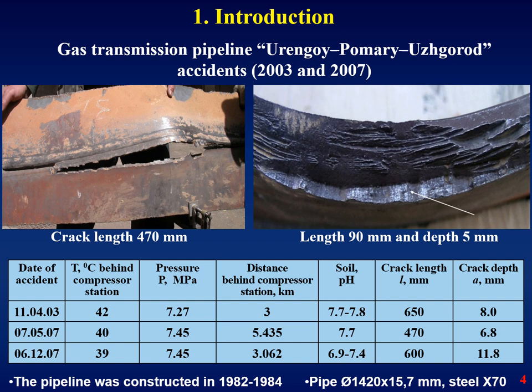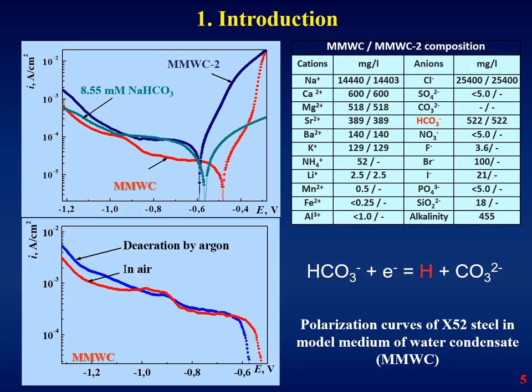However, it doesn't mean that the process on the internal surface does not play any role in a loss of pipe integrity. Our previous electrochemical studies of corrosion processes on pipe steel in an environment which simulates condensate water showed that the process is accompanied by evolution of hydrogen, so the pipe wall can be hydrogenated from the internal surface during operation.